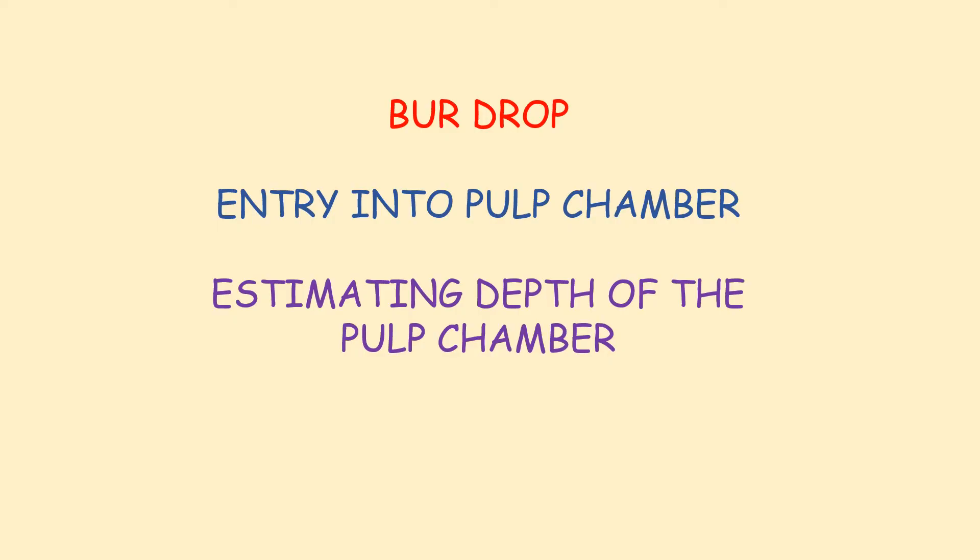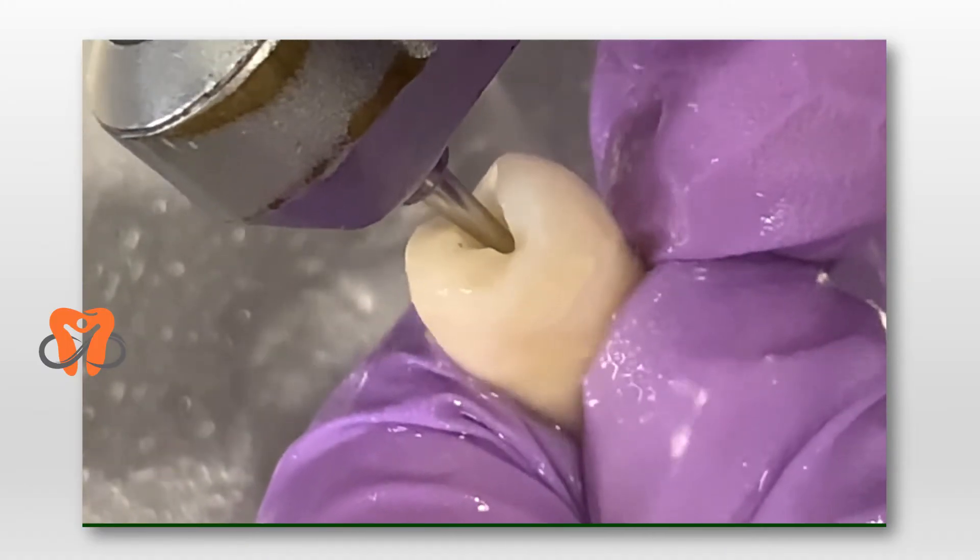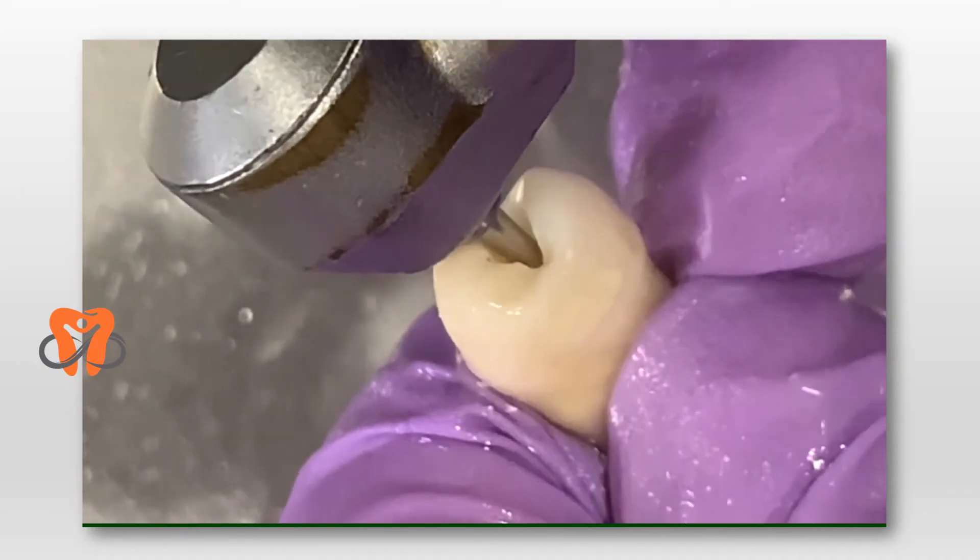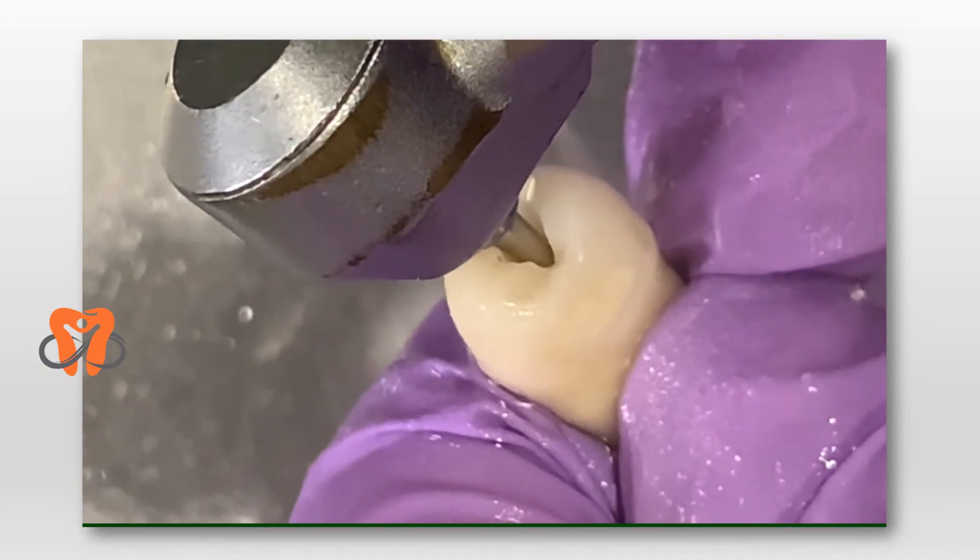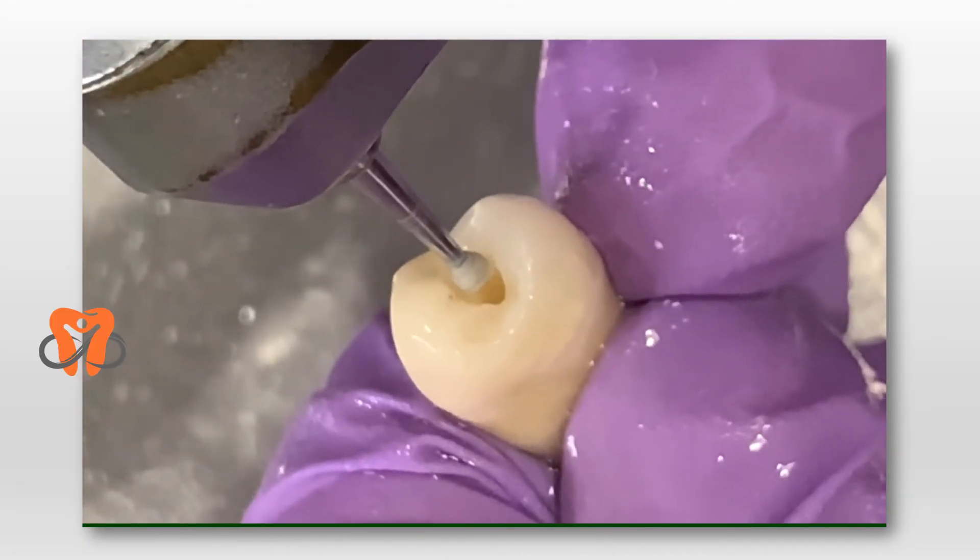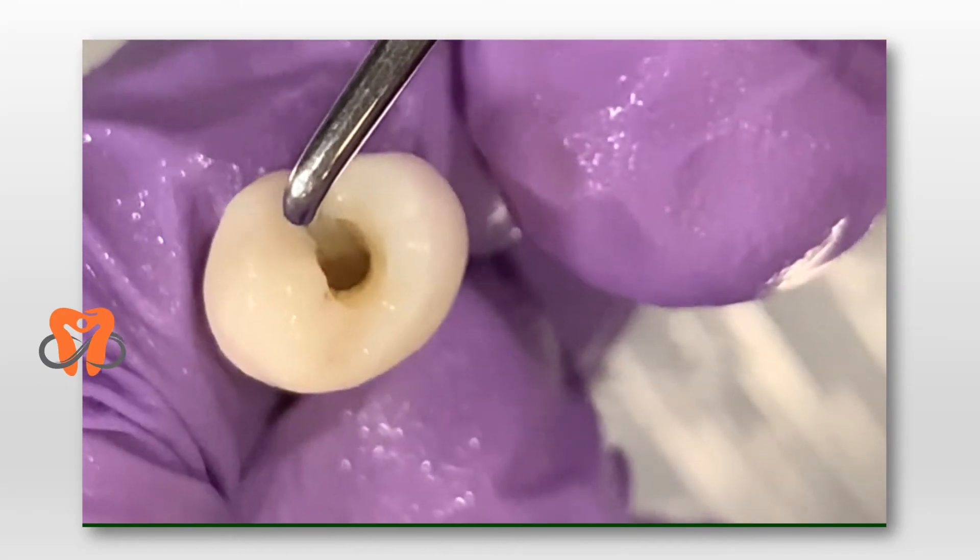In the next section, I will demonstrate the burr drop which indicates entry into the pulp chamber, and then how we estimate the depth of the pulp chamber. We cut through the dentine to reach the pulp chamber till we feel a burr drop like this, and then we stop.